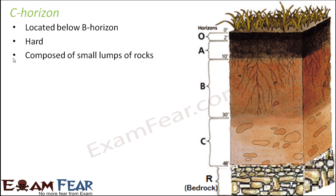The C horizon is composed of small lumps of rocks — it is actually made up of rocks. Since it is made up of rocks, roots cannot penetrate into this layer because rocks are very hard. If you have ever taken soil in your hand, you can feel it is very soft and you can mold it into any shape and press it easily. That is because the soil you pick up is from the topmost layers. But when you start digging deeper, you can actually feel the soil becoming harder and more difficult to dig.